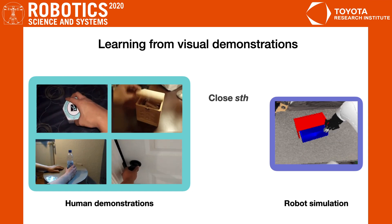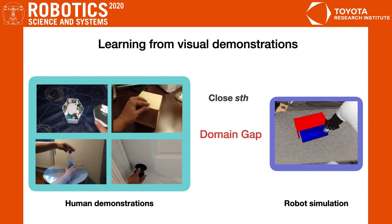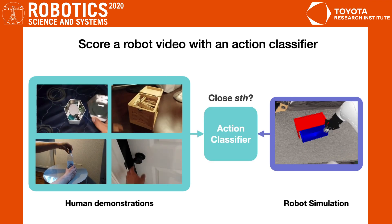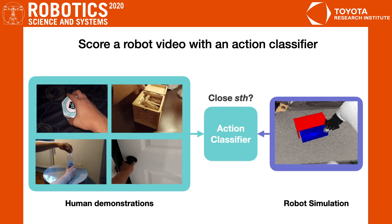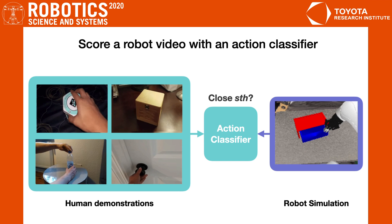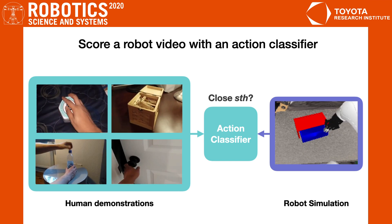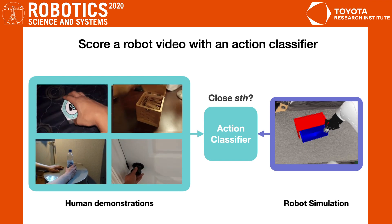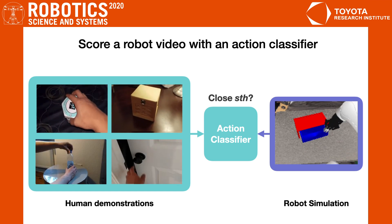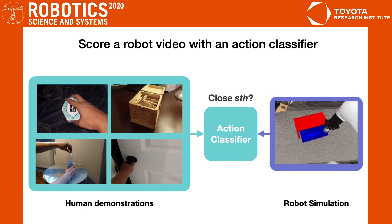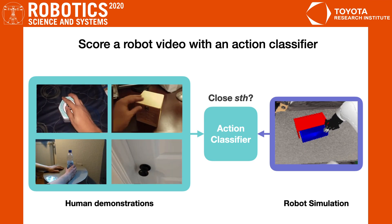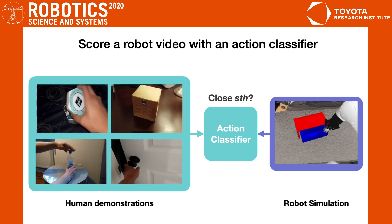However, there are large domain gaps between the human demonstrations and the robot simulations. We address this by using a video action classifier to evaluate the robot trajectories. The video action classifier is first trained to classify the action label of each video clip in the Something-Something dataset, and we then use the learned classifier to score robot videos.